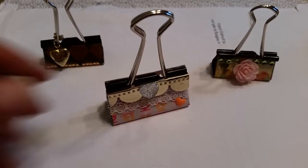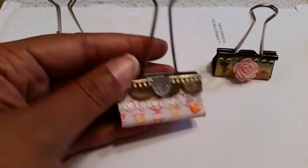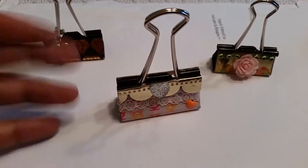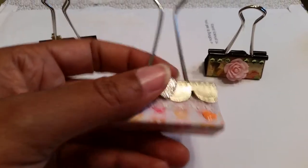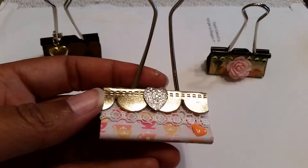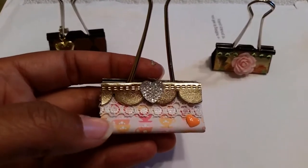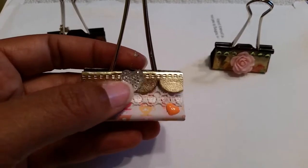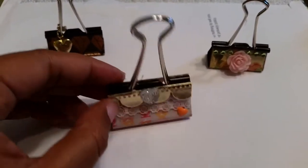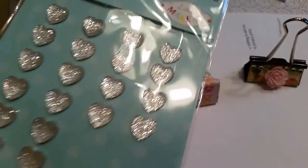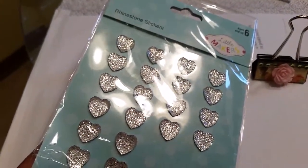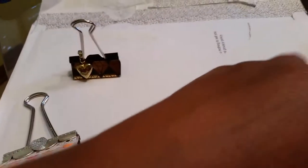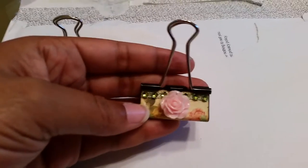Here are mine. The first one is this large binder clip, and I put some gold trim across the top, a little bit of lace here, a heart sticker, and then this heart bling which I got from Joann's in this package here. So that's my first one.